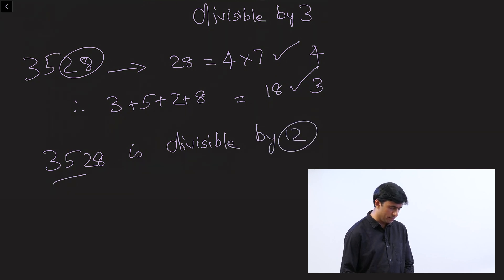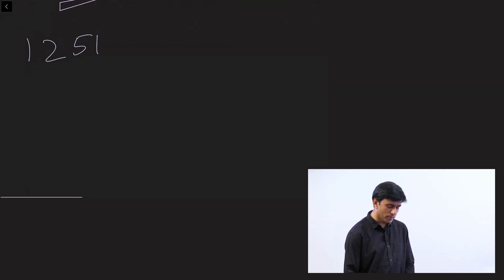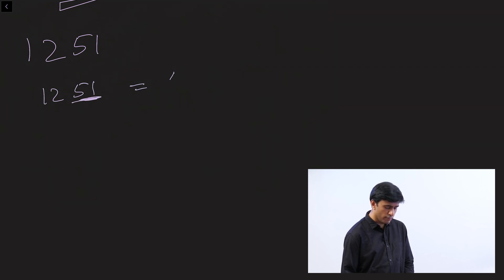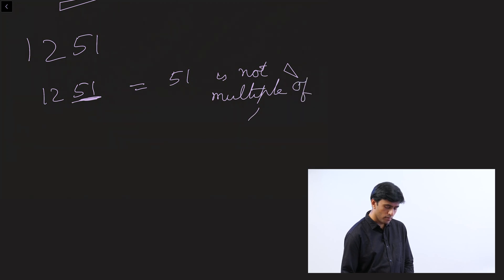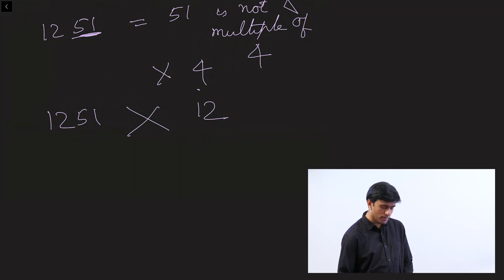Let's take another example: 1,251. Is this divisible by 12? Let's check if it is divisible by 4. The last two digits are 51, which is not a multiple of 4. So it is not divisible by 4. If it is not divisible by 4, then 1,251 cannot be divisible by 12.